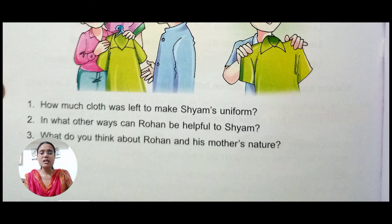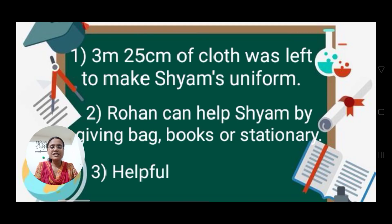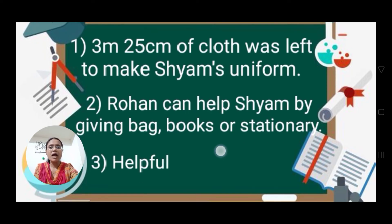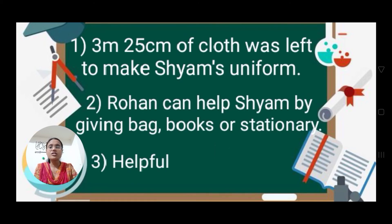Now I will tell you the answers you will write in proper statement form. Your first answer is: 3 meter 25 centimeter of cloth was left to make Shyam's uniform. When you subtract, you will get this answer. Number two: Rohan can help Shyam by giving a bag, books, or stationery. The third answer is: the nature was helpful.